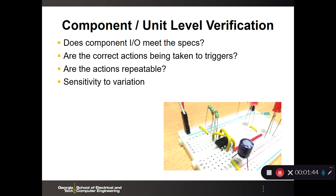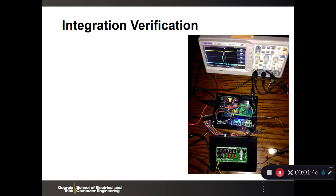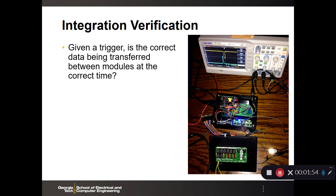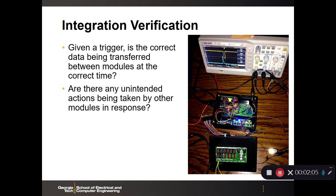Now, once we understand different smaller elements, we then move on to integration testing, where we're now testing subsystems. And what we're going to ask ourselves here is, given a trigger, is the correct data being transferred between modules at the right time? And not only in terms of timing, but are there any unintended actions being taken by other modules in the response?